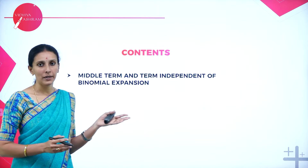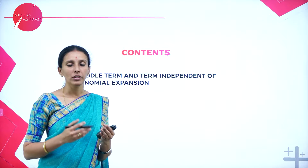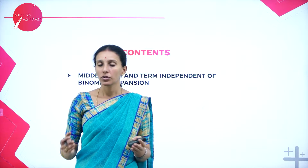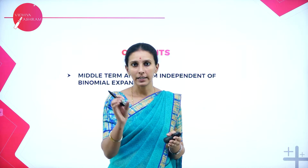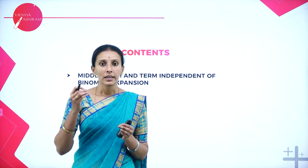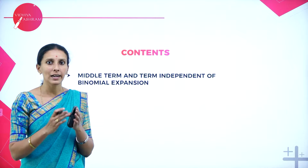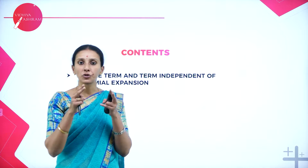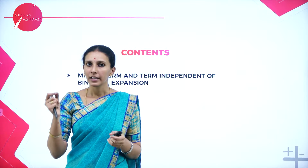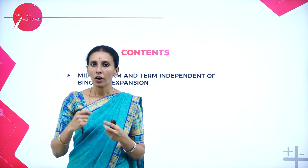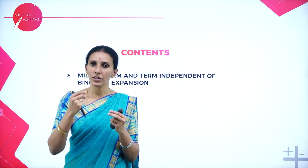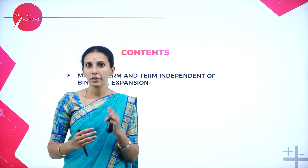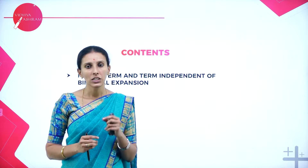What do you mean by the middle term? We know a binomial expansion — if it has N as an index, it contains N plus 1 terms. If the number of terms is odd, the expansion will have exactly one middle term in the form of N/2 plus 1. Otherwise, we will get 2 middle terms if the number of terms is even.